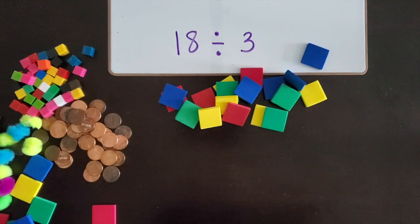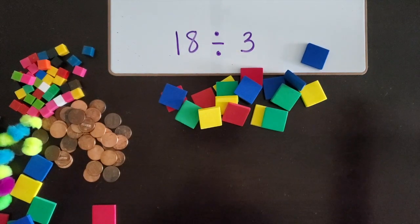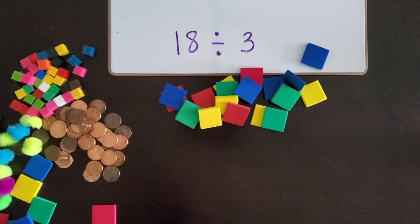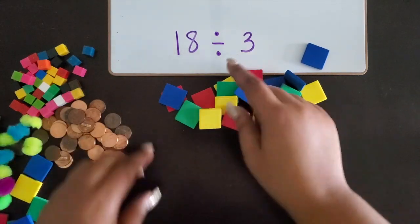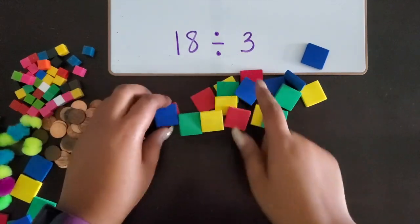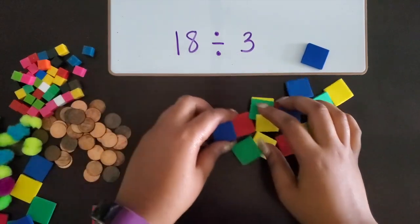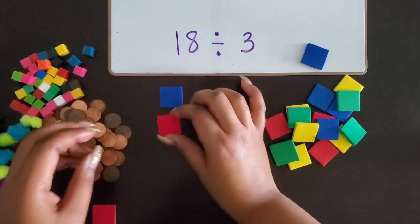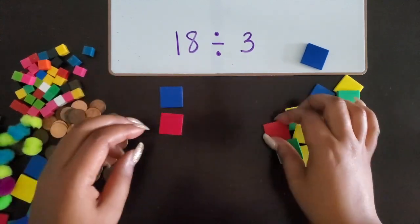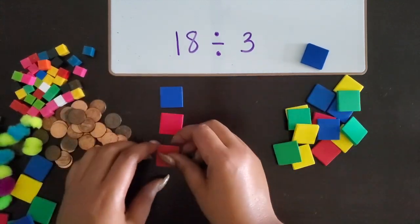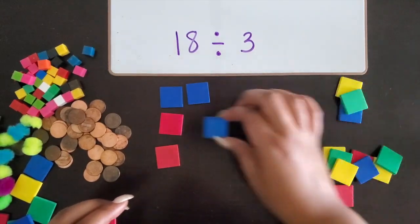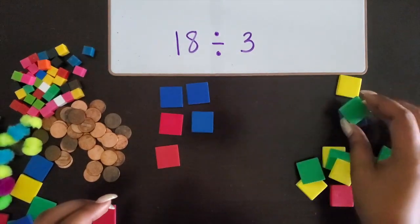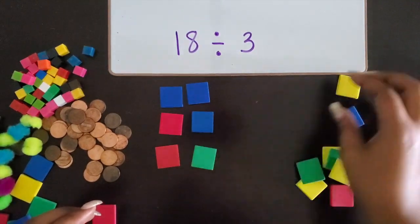Now I want to put them into rows — with an array we use rows, not groups. So I'm going to divide these 18 tiles into three equal rows, starting my rows and then sharing them equally until I have the same amount in each row.